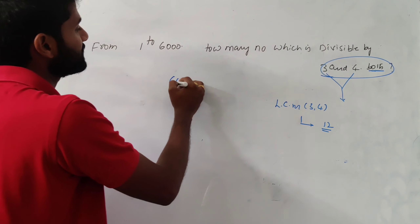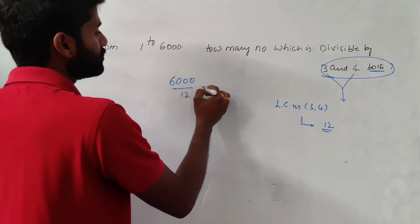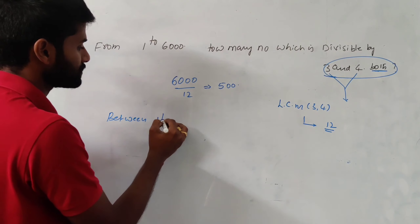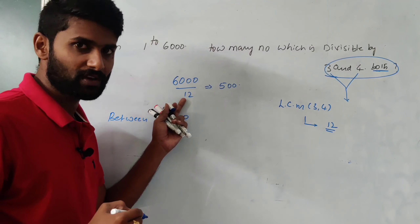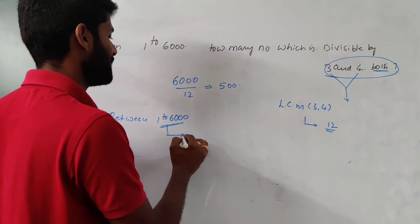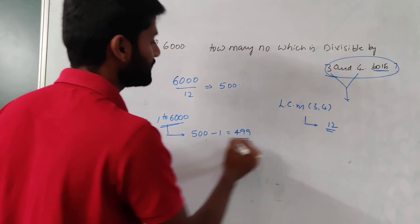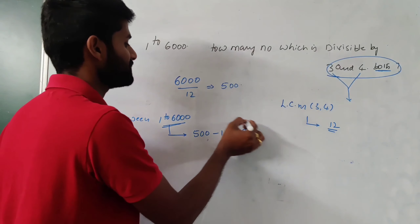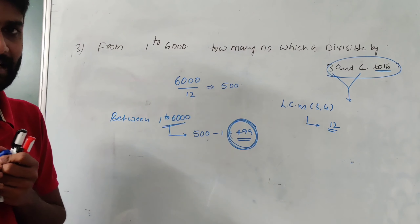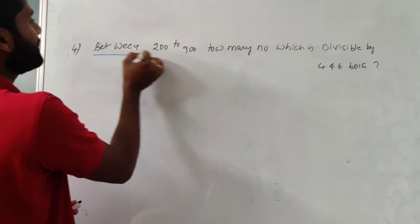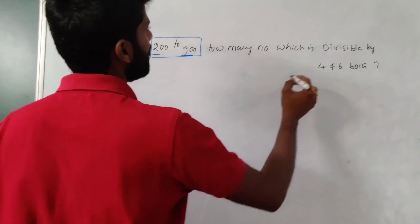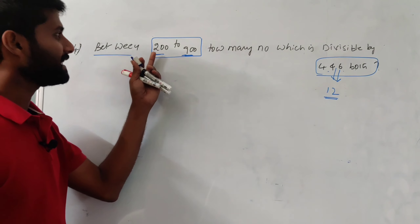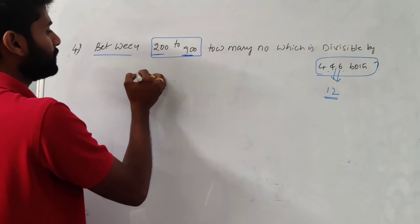Question: from 1 to 5000, how many numbers are exactly divisible by 9? The word 'from' means we include both ends. The last number divisible by 9 within 5000: 5000 divided by 9 gives a decimal, so we take the integer part — the answer is 555. From 1 to 5000, the total count of numbers divisible by 9 is exactly 555.